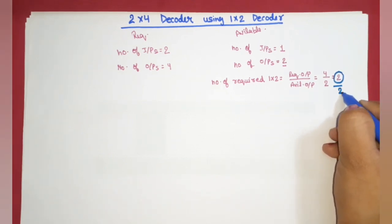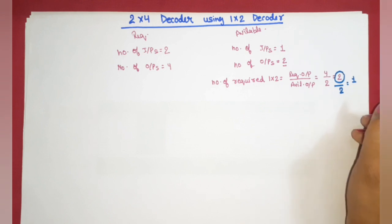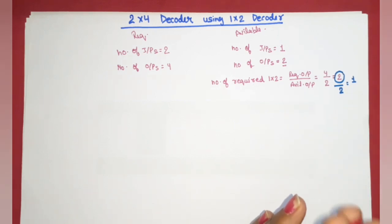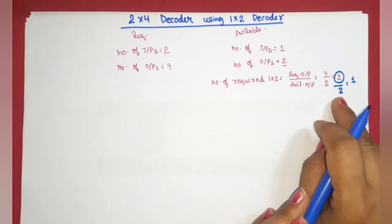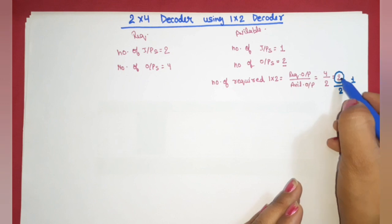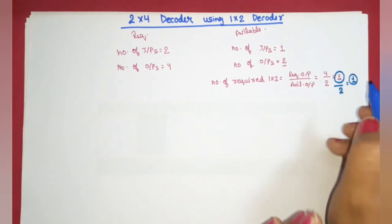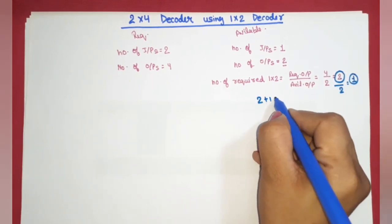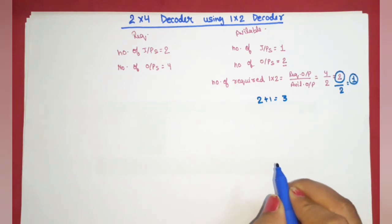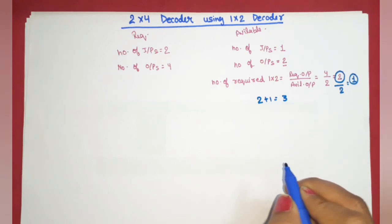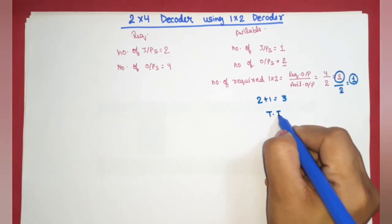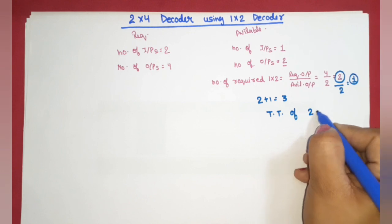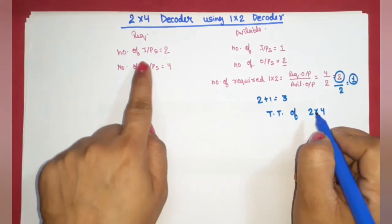After dividing again by two we get one, meaning there are two levels. If we only use one-to-two decoders, we need two plus one, that is three total — two on the second level and one on the first level. Now let me draw the truth table of the two-to-four decoder.